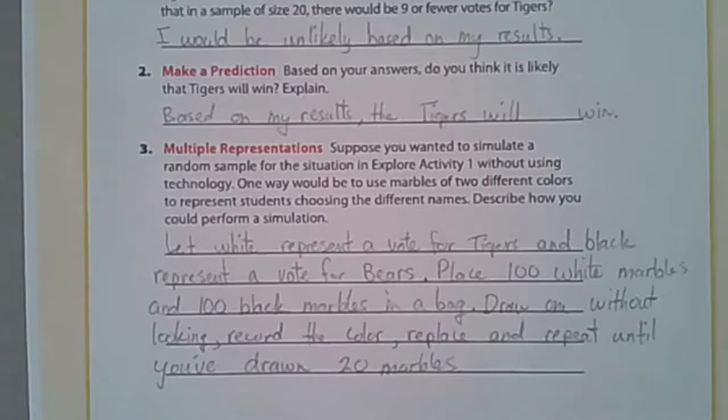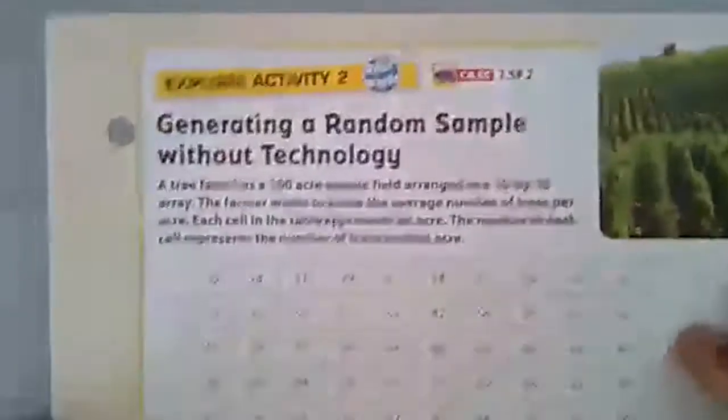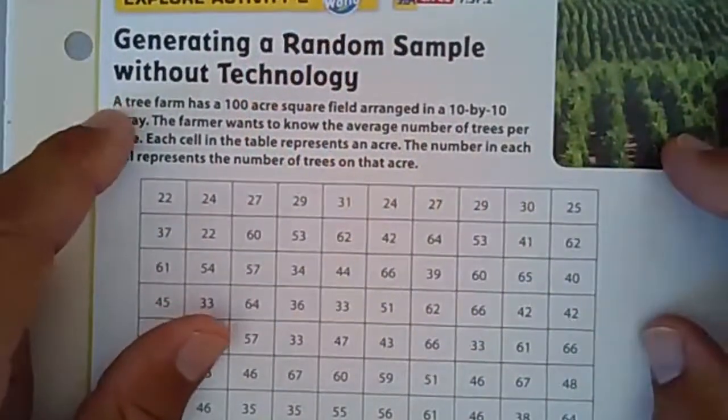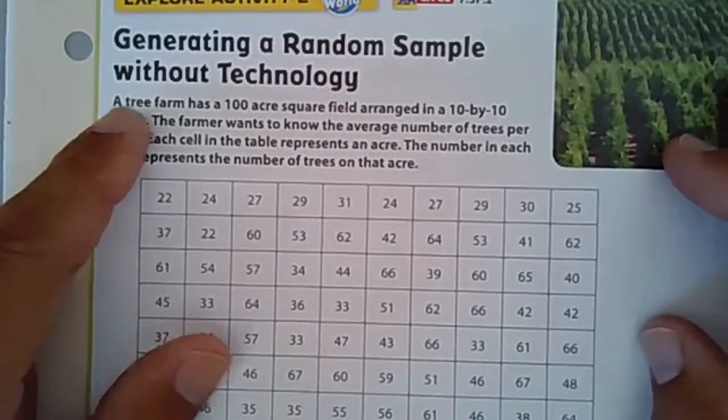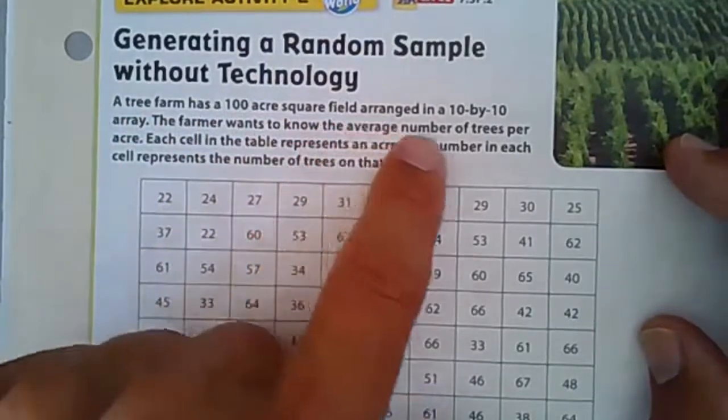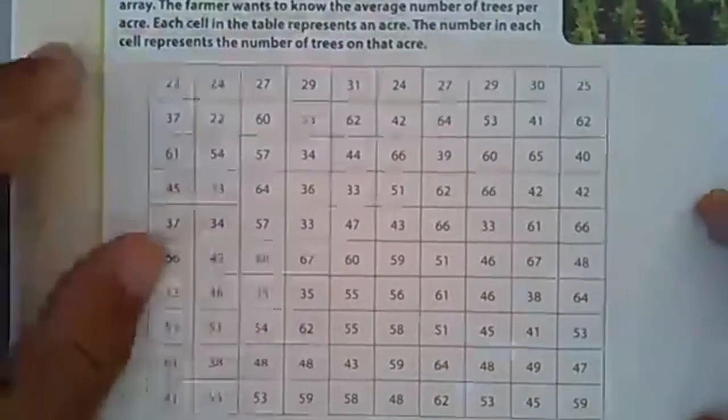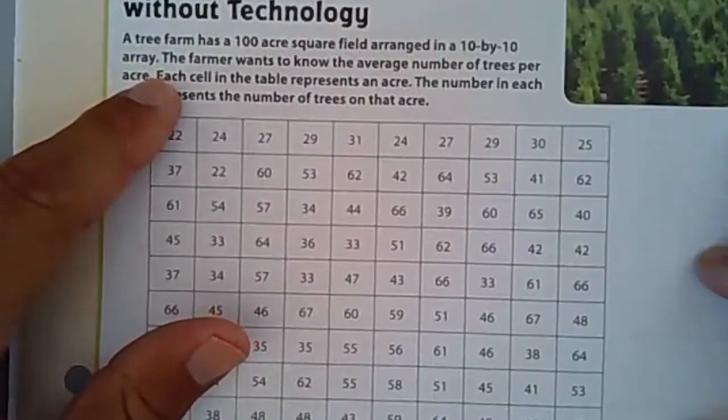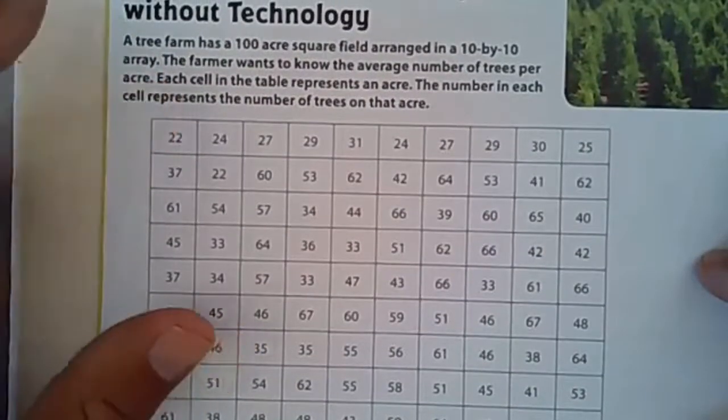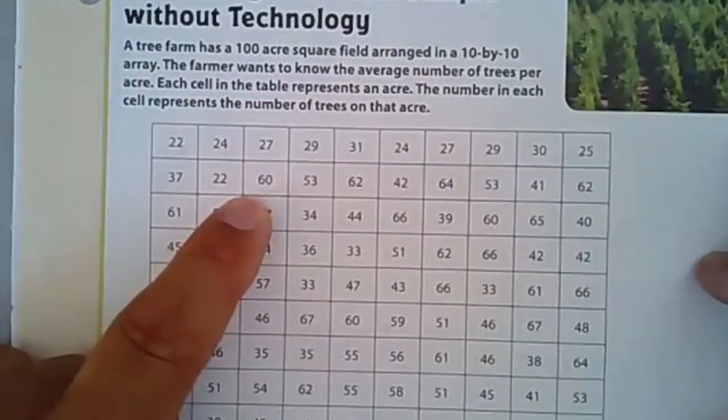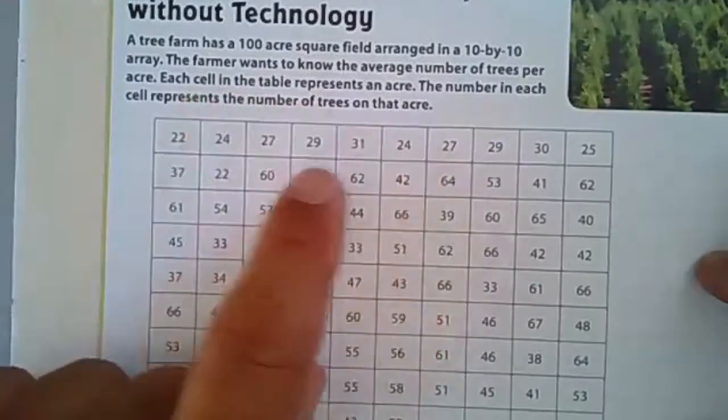That is what you could do, and we'll move on to explore activity two. In this situation, a tree farm has a 100 acre square field arranged in a 10 by 10 array. Here's our 10 by 10 array. 10 by 10 makes 100. The farmer wants to know the average number of trees per acre.